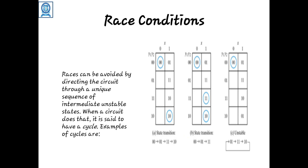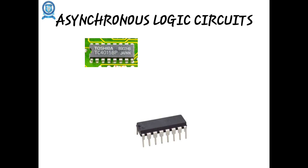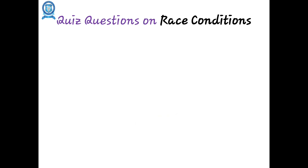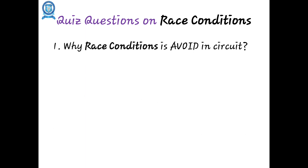When the circuit makes a transition through a series of unstable states, cycles occur. To avoid critical races, two techniques are commonly used: shared row state assignment and one-hot assignment. Race conditions should be avoided in a circuit to eliminate delays and improve circuit speed.